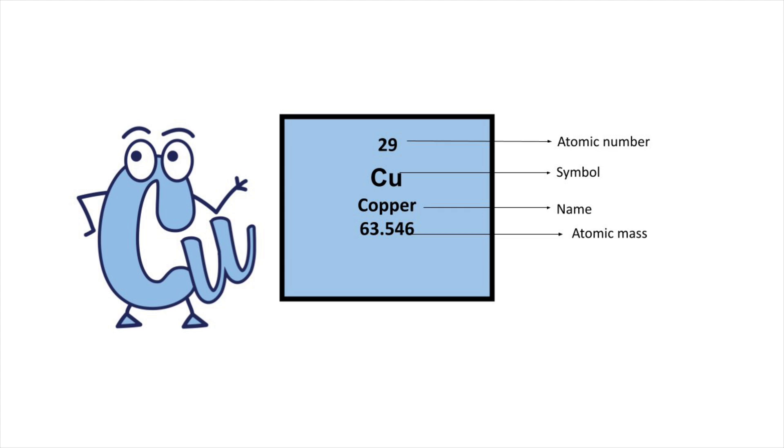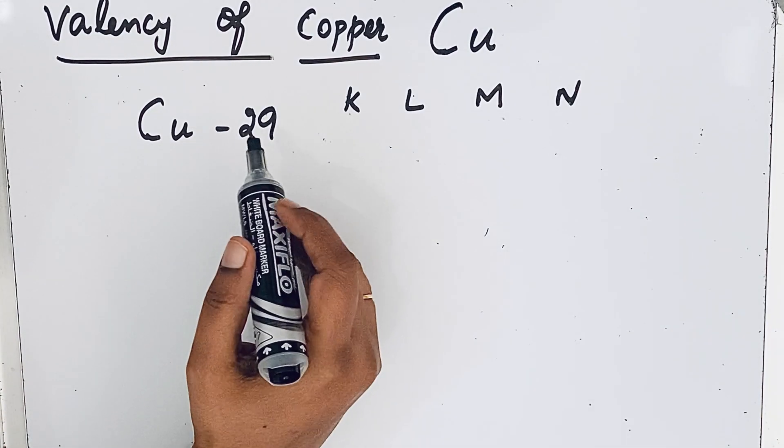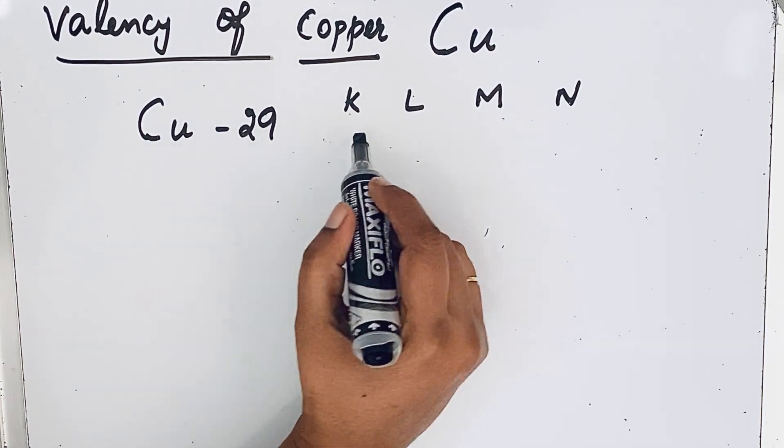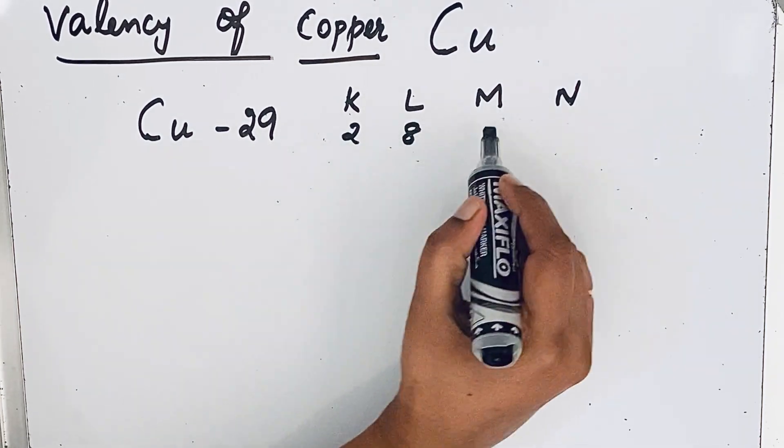Copper's atomic number is 29. From the atomic number, we can write the electronic configuration: 2, 8, 18, 1.